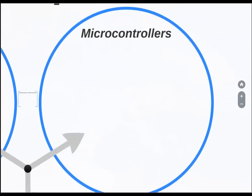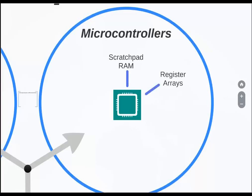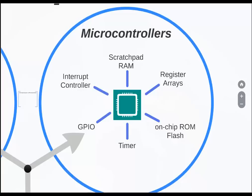Microcontrollers on the other hand are highly integrated chips that contain a CPU. Apart from the CPU, they have a scratchpad RAM, register arrays, on-chip ROM flash for storing programs, timers and GPIO devices, and interrupt controllers and many more things. All of these components come together and are put onto one IC and that is what a microcontroller is.